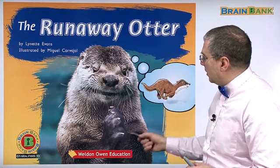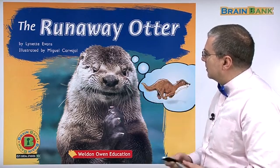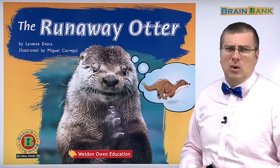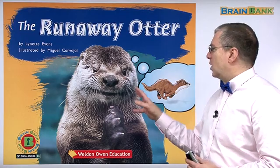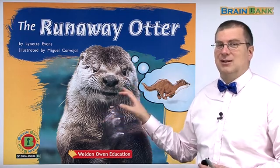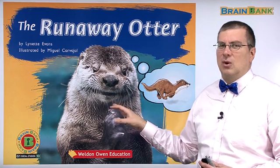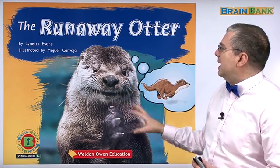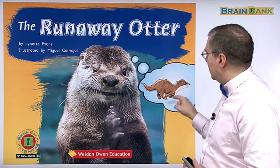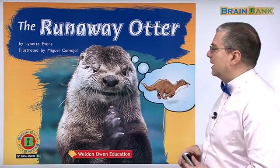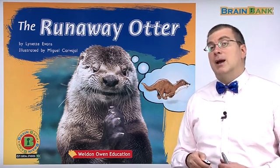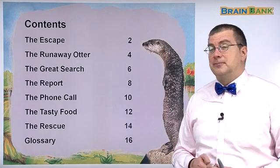So this otter, which looks like a little — it almost looks like a squirrel, really — but it's an otter. An otter lives in the ocean, not like a squirrel, but it looks like a squirrel. This is another picture of an otter here. He's thinking of running away. And by the way, this is a true story.